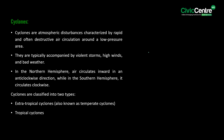Cyclones are atmospheric disturbances characterized by rapid and often destructive air circulation around a low pressure area. They are typically accompanied by violent storms, high winds, and bad weather. In the northern hemisphere, the air circulates inward in an anti-clockwise direction, while in the southern hemisphere it circulates clockwise.